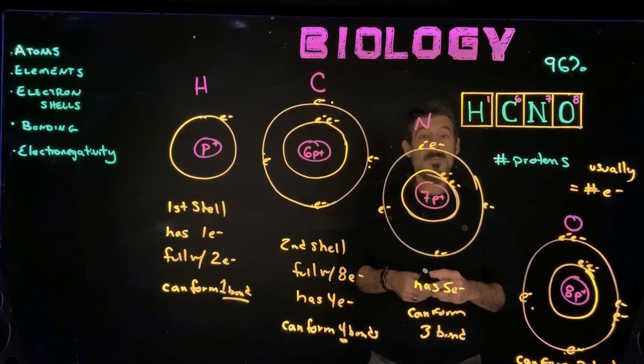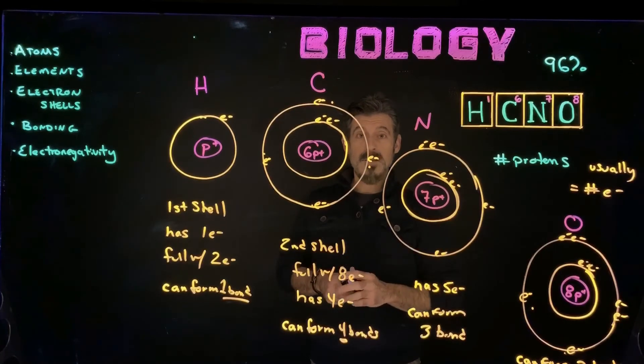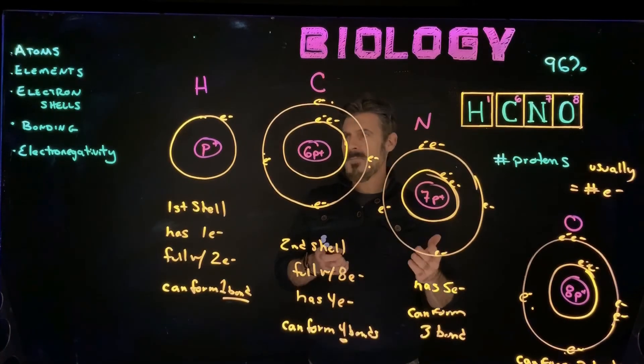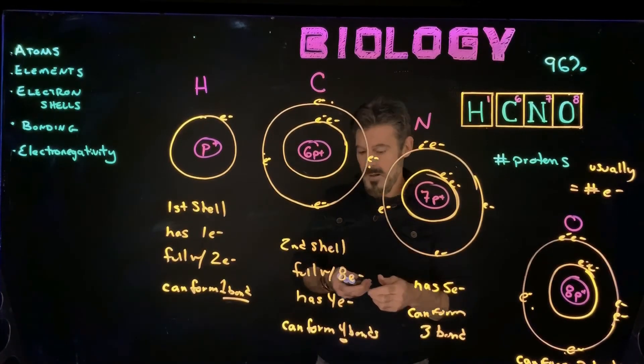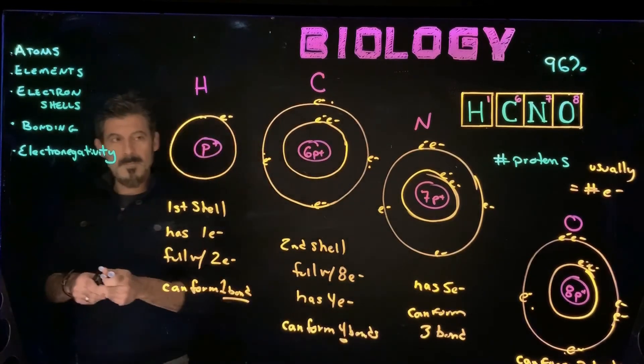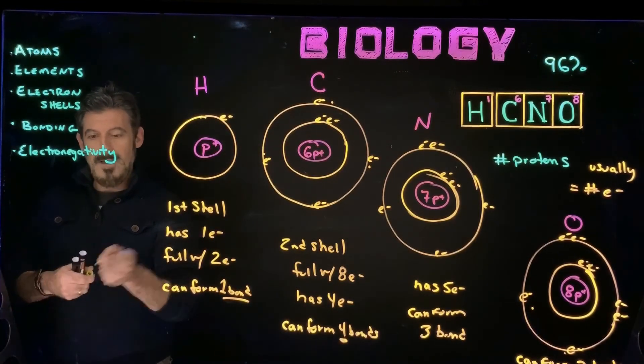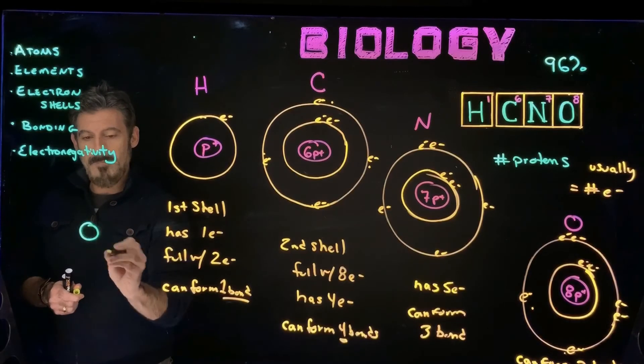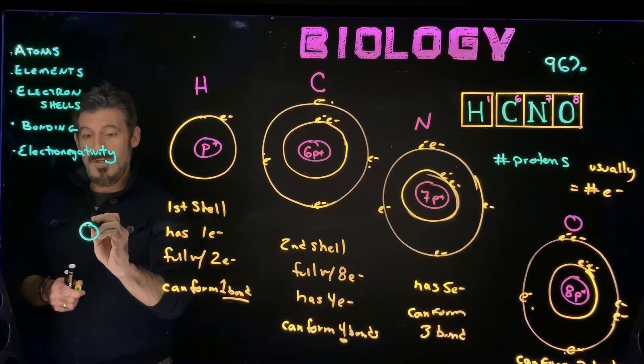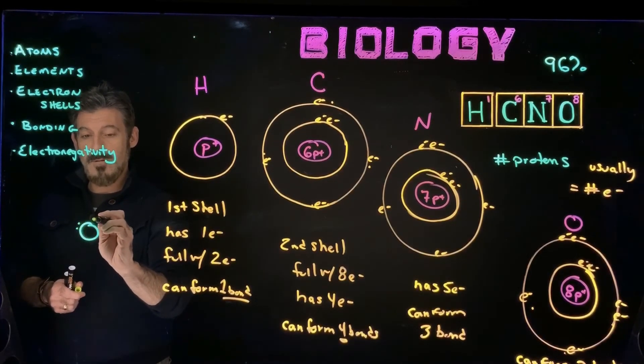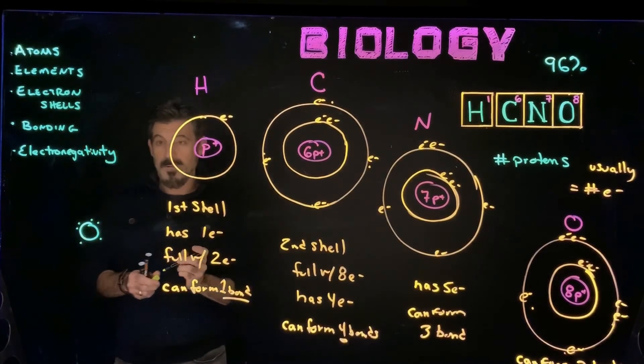This is going to be important as we draw some of the different biological molecules. Say, for example, when we draw a water molecule. So a water molecule is going to have oxygen, which in its outer shell has one, two, three, four, five, six electrons.